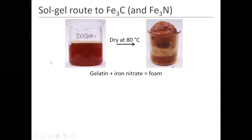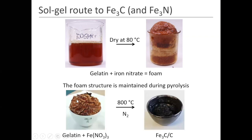This is what the solution looks like: you've added the gelatin solution and the iron nitrate solution, and it's this sort of gloopy red-brown solution. Depending on concentration, it can range from honey-like when relatively dilute, to more like treacle, to almost like a jelly sweet at really concentrated. When you dry this solution around 80°C before the calcination process, the solution gradually dries down through the beaker, forms a sticky viscous mixture at the bottom, and then this gradually puffs up to form a foam.